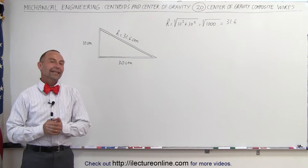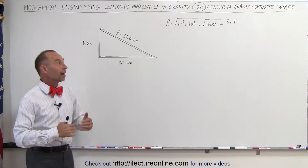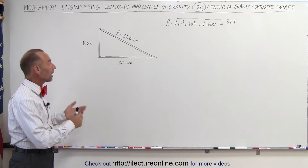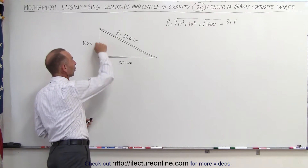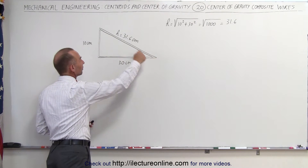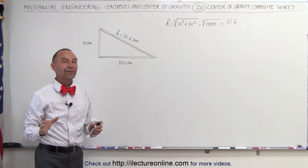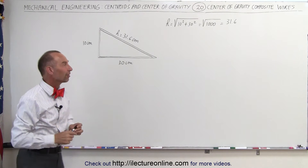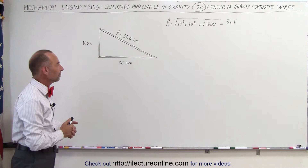Welcome to Electron Online. In this example we're going to look at a composite wire. We have three pieces of wire joined together making a triangle, and we're trying to find the center of mass of these three wires joined together.